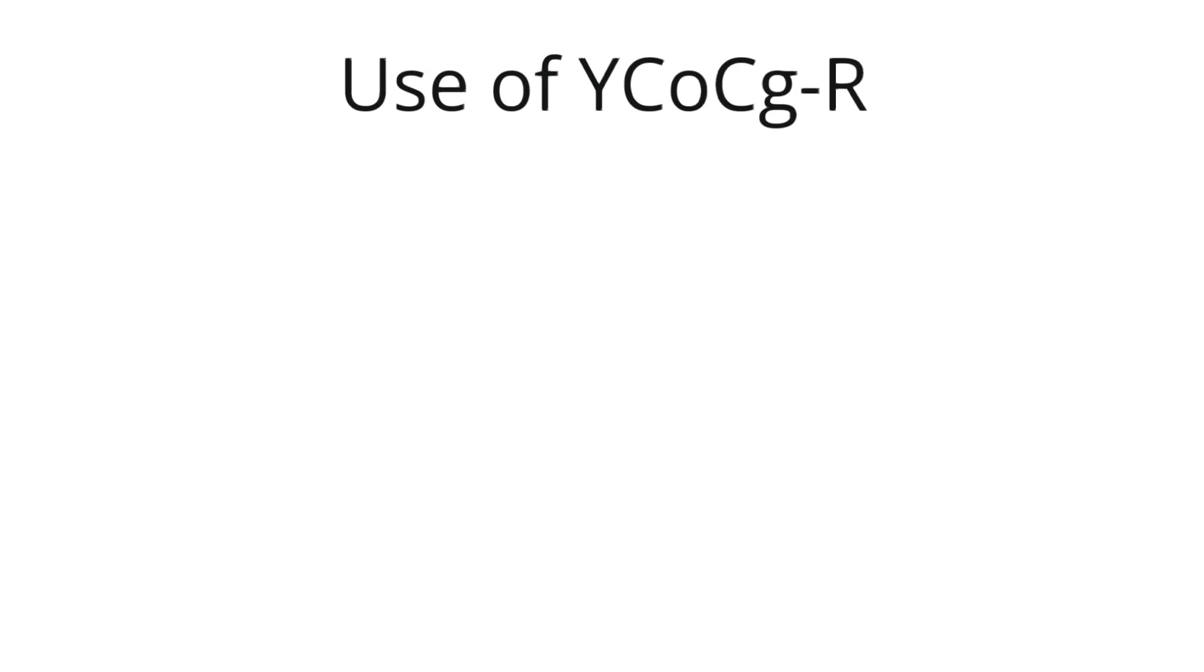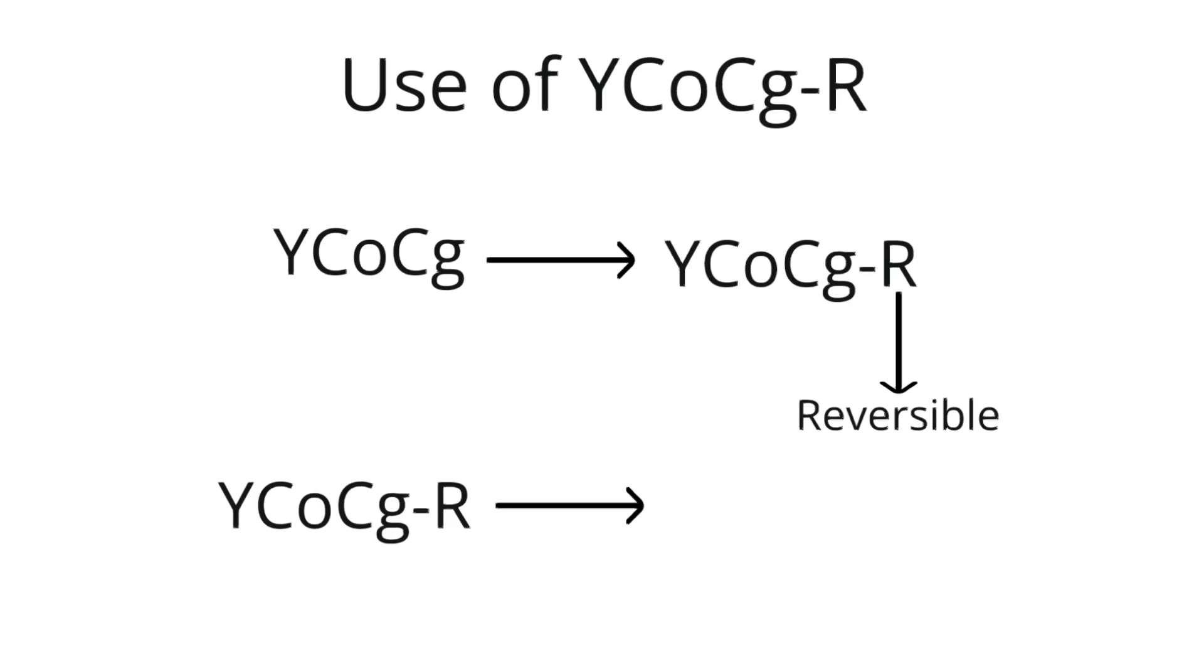The specific variant of YCOCG used in DSC is YCOCGR, where R stands for reversible. This means that, in theory, the conversion from YCOCGR back to RGB should not cause any loss of information. This reversibility is desirable as it allows for the original RGB values to be accurately reconstructed after decompression.